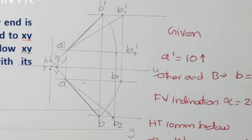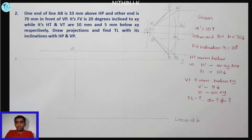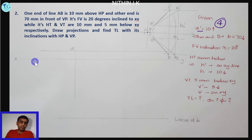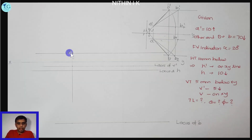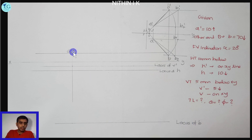We will use A-dash and B-dash to extend the line. We will use 4 loci: A-dash, AB, H, and V-dash. The first step is that A-dash is on the XY line. The locus of B is on line B, and we can locate A-dash on B. B-dash is also on this line.